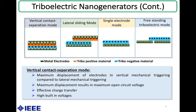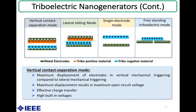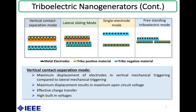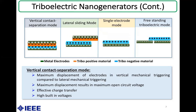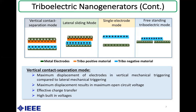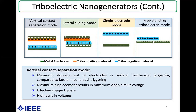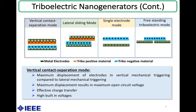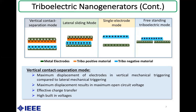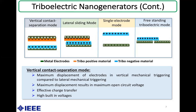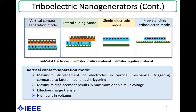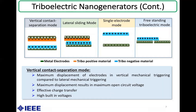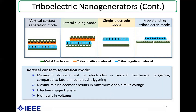Taking the vertical contact separation mode, also called CS mode, as an example: it is triggered by a vertical periodic driving force that causes repeated contact and separation of two dissimilar materials that have coated electrodes on the top and bottom surfaces. The CS mode is a standout method of triboelectric energy harvesting due to its reported high power density compared to the other three modes, because it develops high built-in voltages between the electrodes due to the vertical mechanical triggering.